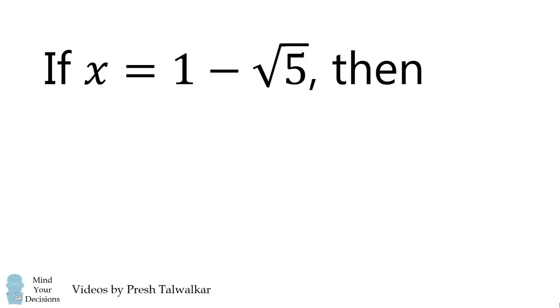If x is equal to 1 minus the square root of 5, then x to the power of 4 minus 4x cubed plus 4x squared is what value?